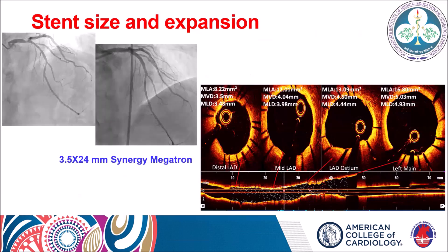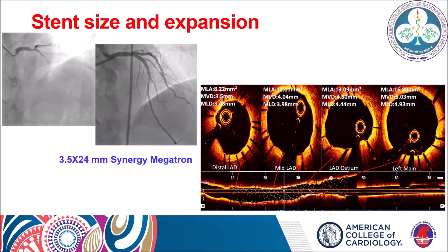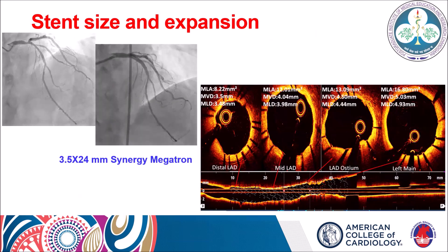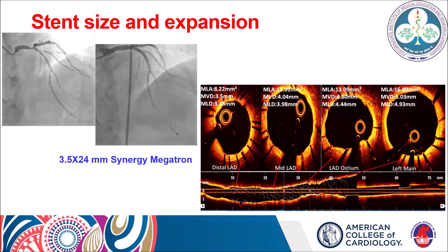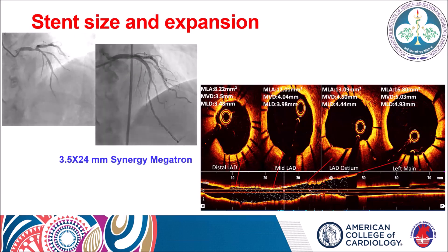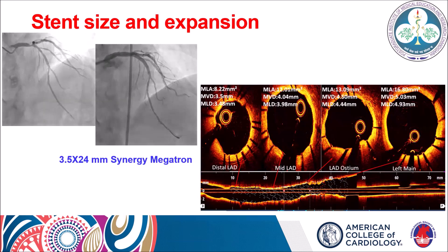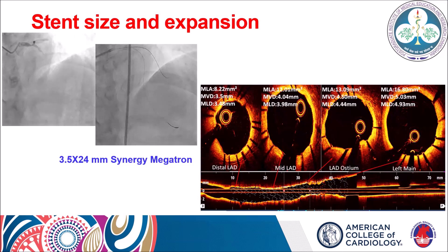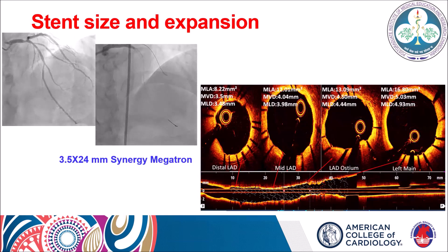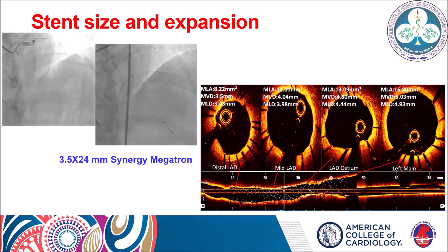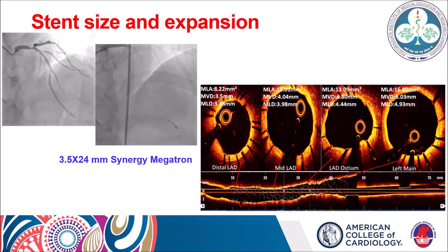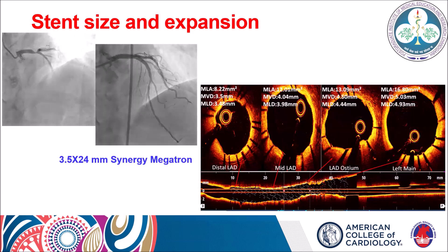This case with tapering left main to LAD disease was initially stented with a single 3.5×24 mm stent, but OCT imaging demonstrated that vessel dimensions taper from 3.5 mm at mid-LAD, to 4 mm at proximal LAD, to 4.5 mm at the ostium, and 5 mm at the left main. A single stent cannot provide optimal results across this tapering vessel; therefore, with imaging guidance, NC balloon dilatation was performed according to the reference diameter of each segment, achieving an optimal result throughout the stented segment.